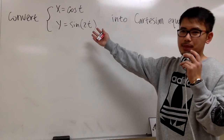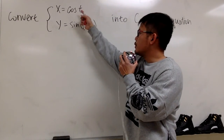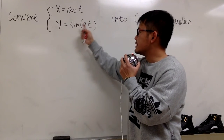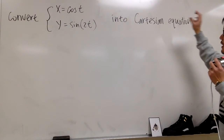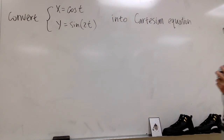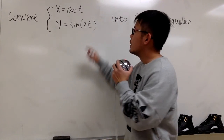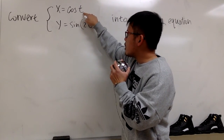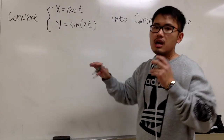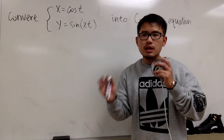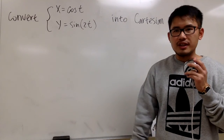Let me show you how we can convert this parametric equation — x is equal to cosine t, and y is equal to sine of 2t — into a Cartesian equation. The challenging part is that we have cosine t here but sine of 2t there. The angles are different, and this is how we can take care of it.